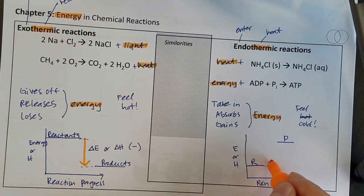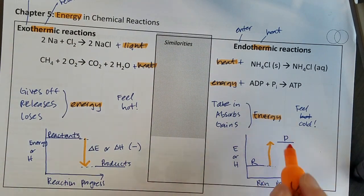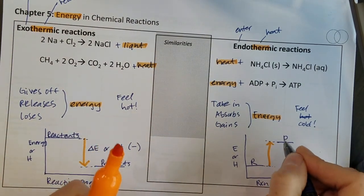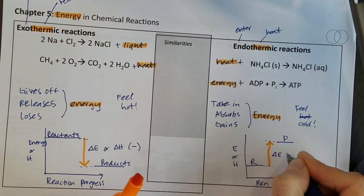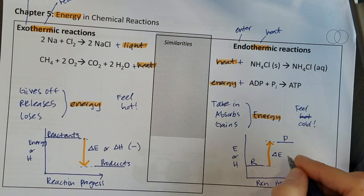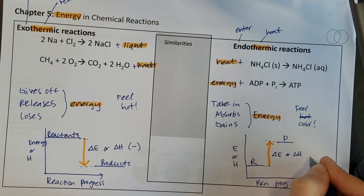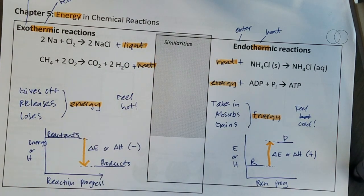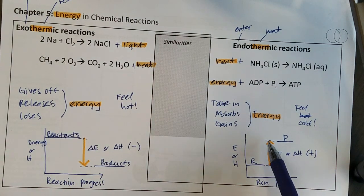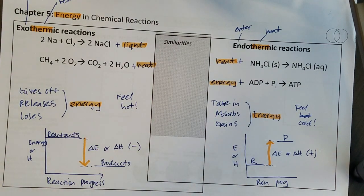As the reaction happens they're gaining that energy that we saw, so my energy goes from where the reactants are to where the products are and this would be my change in energy or change in heat and we're always going to see a positive sign for that because it's a positive thing if you gain heat or money or whatever.